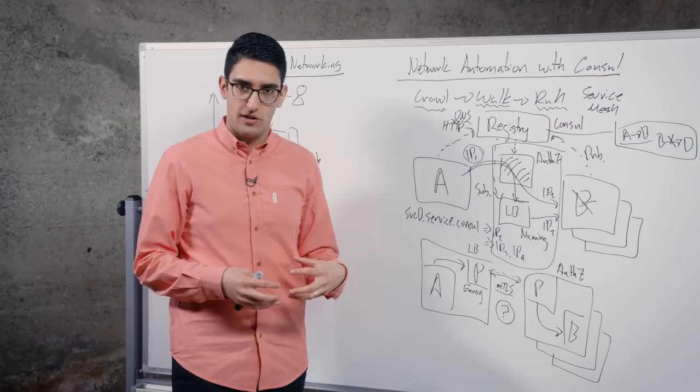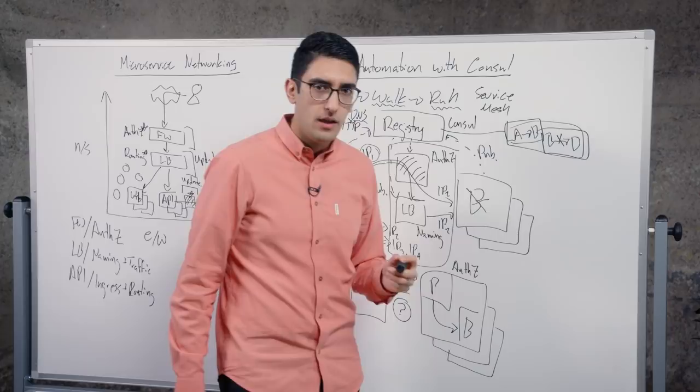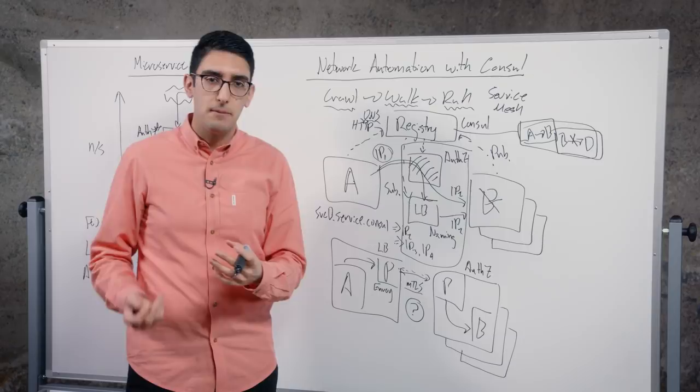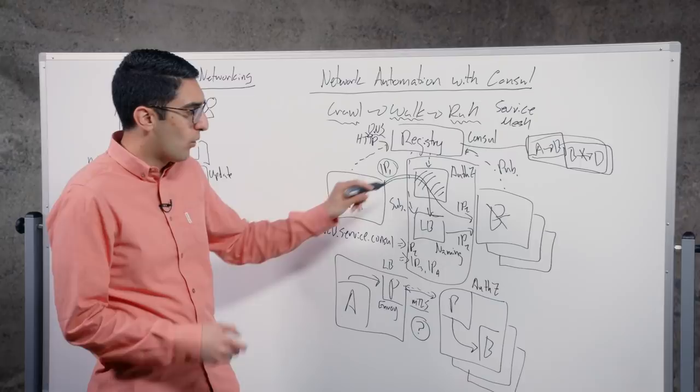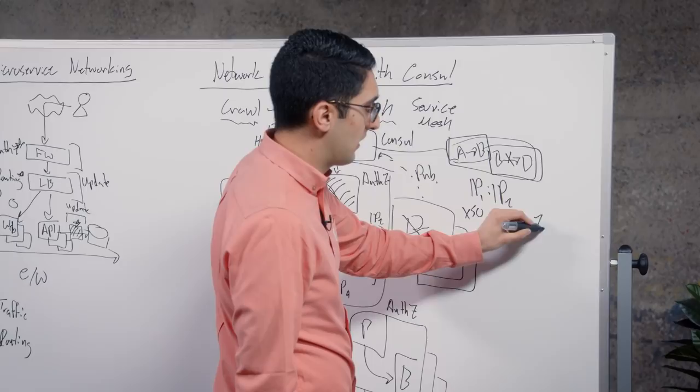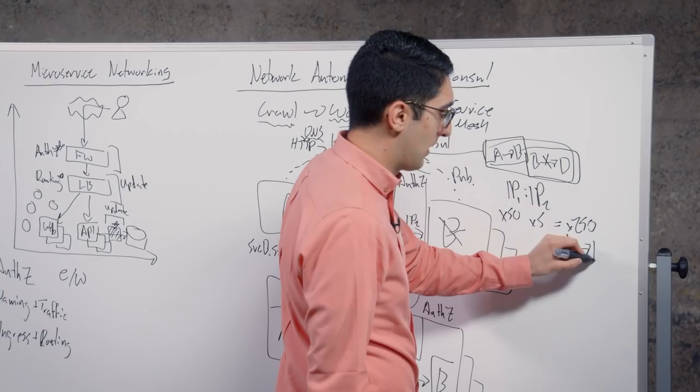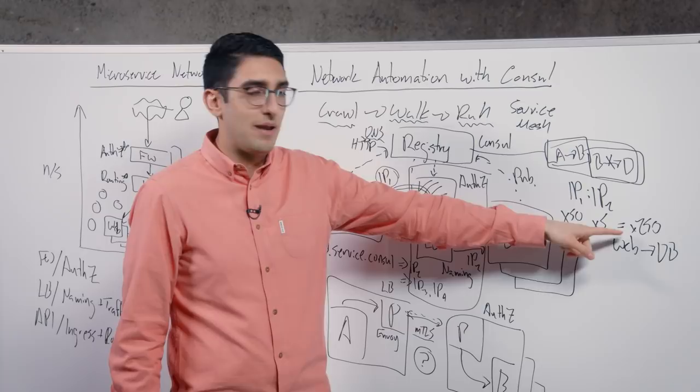The final really important piece is when we talked about these rules of service A is allowed to talk to service B or service B is not allowed to talk to service D. What we're talking about is a logical service, the logical service A to the logical service B. What doesn't matter is if there's one, ten, or a thousand copies of A or one, ten, or a thousand copies of B. The rule is the same. This is very unlike a firewall where the rules are IP1 to IP2. If I have 50 web servers and I have five databases, the same thing might turn into 250 firewall rules. The equivalent of what we would say at a logical level is web to database. A key property here is by talking about the rule set, the intentions of Consul in a logical way rather than a physical way with IPs, the scale of management is potentially hundreds or thousands of times less complex.